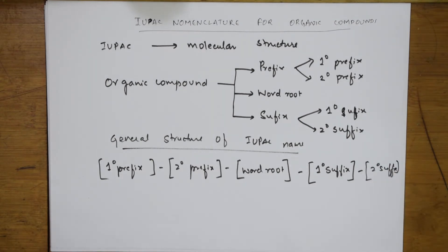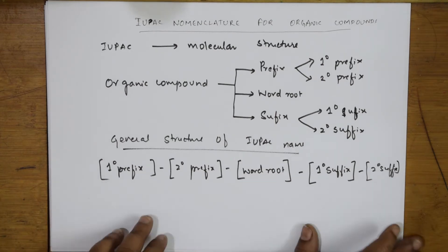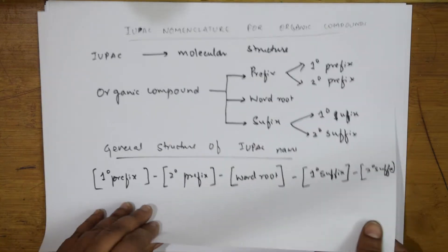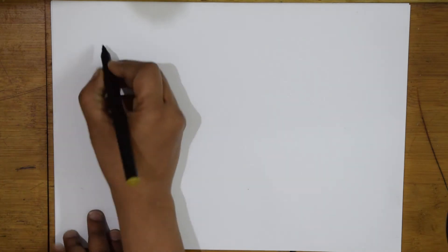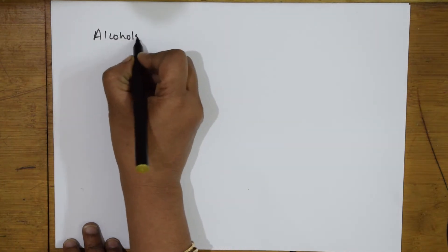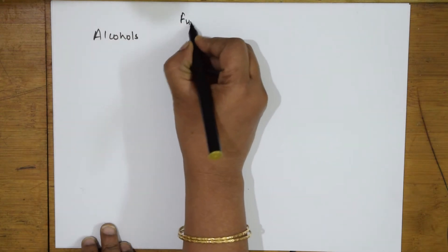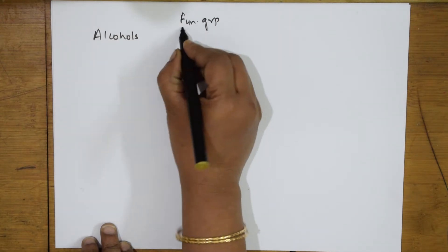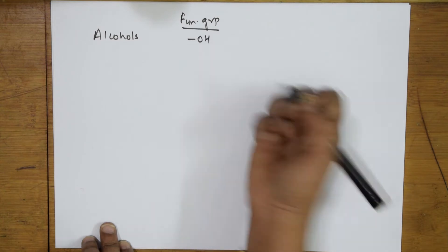Now, when I have to take certain examples, remember this order. Let me take certain examples and show you how to write. Whenever I am talking about alcohols — the functional group present in alcohol is OH, which you have studied in grade 10. The suffix in this case would be 'ol'. If I have a ketone, the group present is C double bond O with CH3 on either side. The suffix used is 'one'.